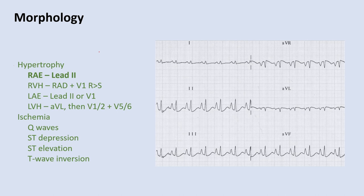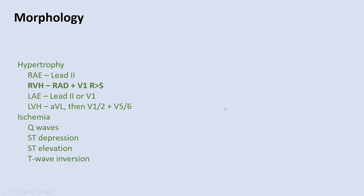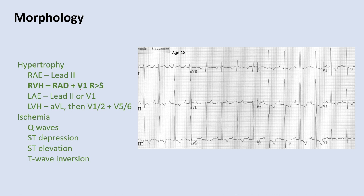The first area to look is lead 2. For right atrial enlargement, simply look at the P wave — if it's greater than 2.5 millimeters in lead 2, that's a sign of right atrial enlargement. Right ventricular hypertrophy is more involved: you're looking for right axis deviation plus, in lead V1, an R wave greater than the S wave. Normally V1 is more negative, so if you see an R wave greater than an S wave in V1, that suggests right ventricular hypertrophy. Confirm right axis deviation with lead 1 thumbs down and lead 2 thumbs up, then check V1 for a tall R wave with minimal or no S wave.